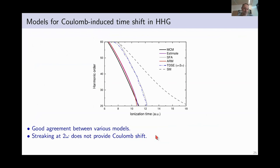So I showed you these three models to model the Coulomb shift of the ionization time in high harmonic generation. And as we see here, this is the result of the three models. They are very similar to each other. And they differ from the quantum orbit time, which is the gray line, and also very much from the simple man's model, which is the dashed line.